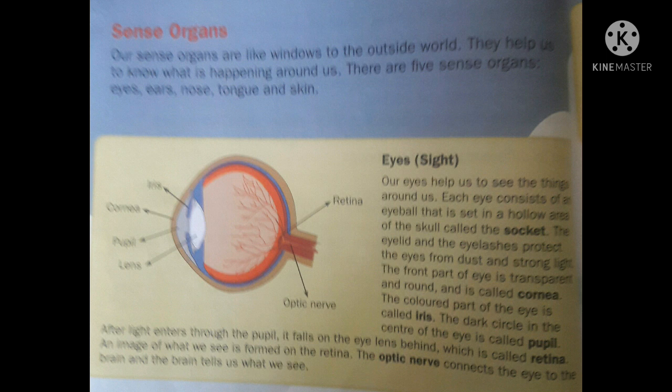After the pupil is the eye lens. After light enters through the pupil, it falls on the eye lens behind the pupil, and then it is focused on the retina. Retina is the innermost layer of the eye. An image of what we see is formed on the retina, but the image is inverted. Children, always remember: on the retina, an inverted image is formed.